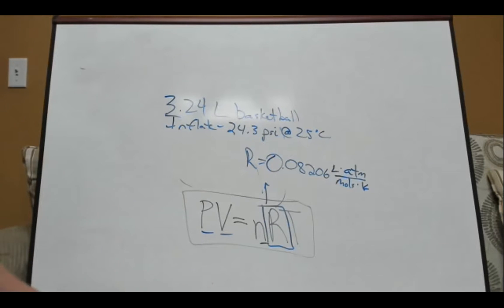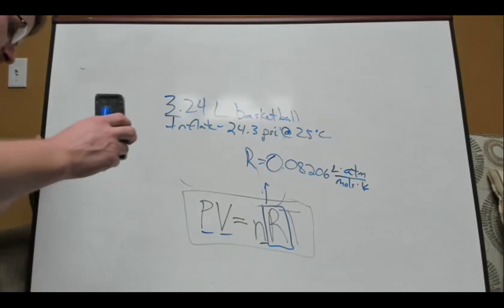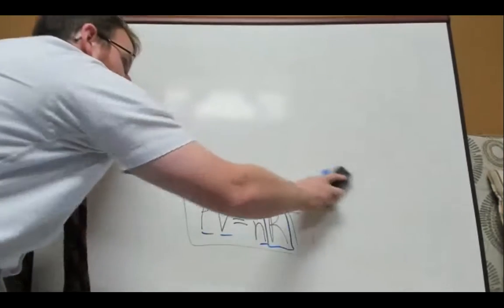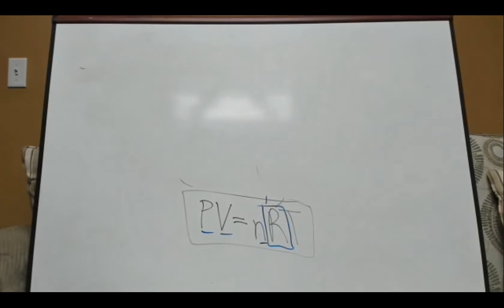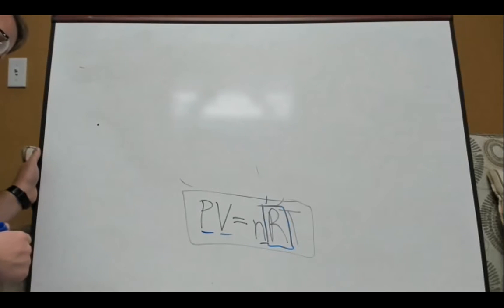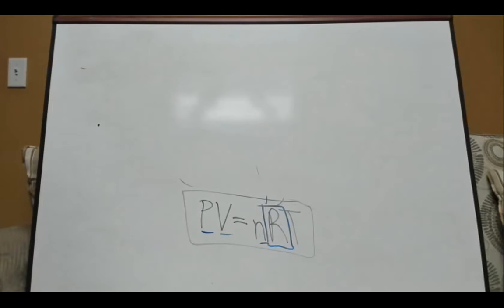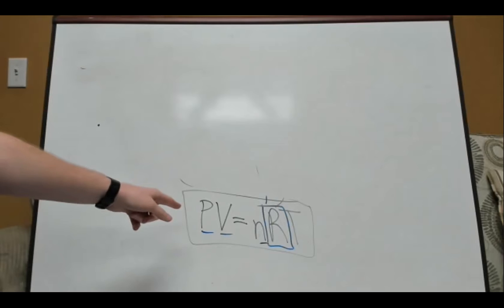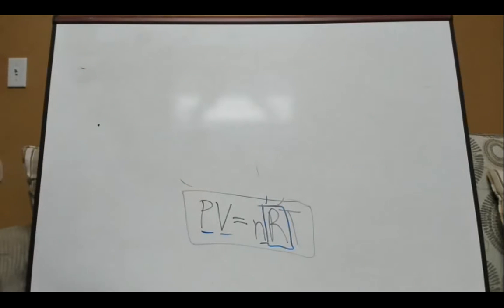Now let's think about densities — densities of a gas. Here's a question: we fill up a balloon with helium and it floats. We fill up a balloon with our own air and it doesn't. Why not? To answer that, we're going to have to calculate density. How do we do that with the ideal gas law? Because I said this ideal gas law is powerful — how in the world would we go about calculating density using it?